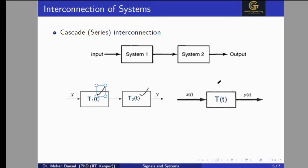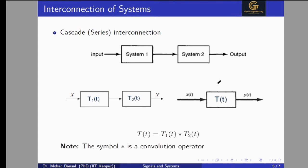A lot of people make a mistake here — they directly multiply both of them. But in the time domain, it will be convolved: T1 and T2 are convolved. So T(T) is equal to T1(T) convolved with T2(T). The star is not a multiplication sign — it is a convolution operator.